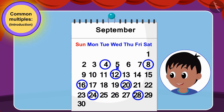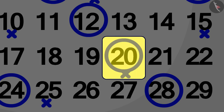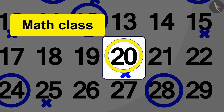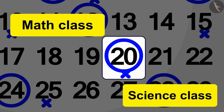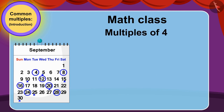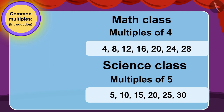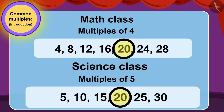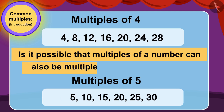Raju excitedly made a mark on the calendar on the dates on which Bablu will go to science class. Now, when Raju and Bablu looked closely at the calendar, they found that on the 20th, Bablu had made the circle for math class and Raju also made a mark for science class on the 20th. We can see that Bablu's math class dates are multiples of 4 and his science class dates are multiples of 5, and 20 is a multiple of both numbers.